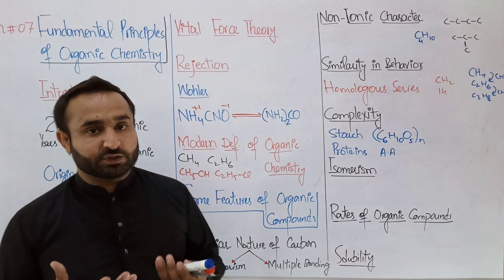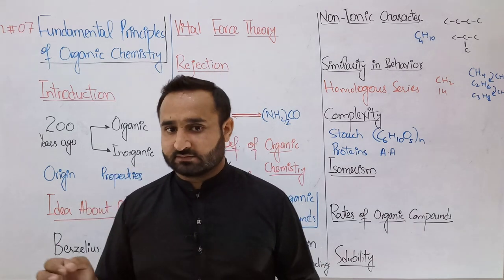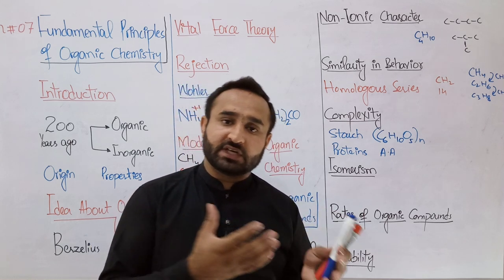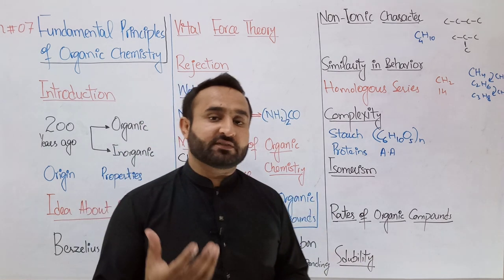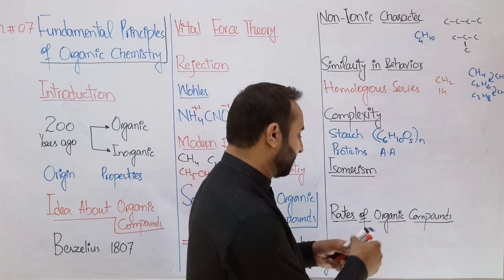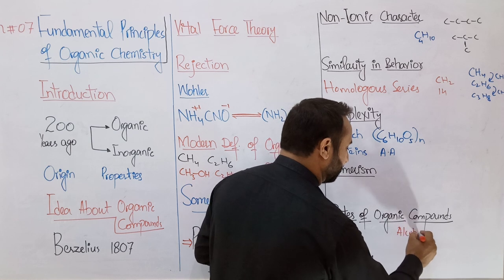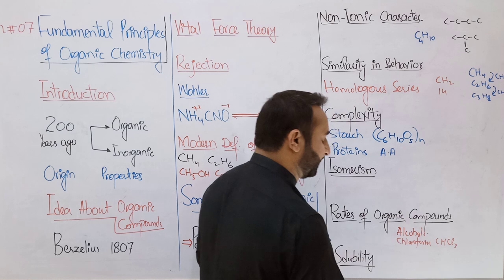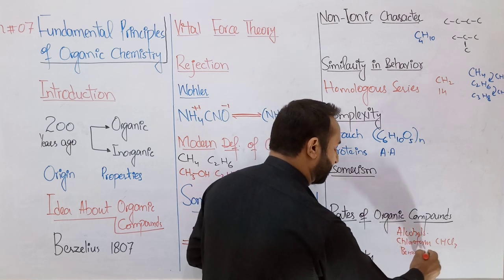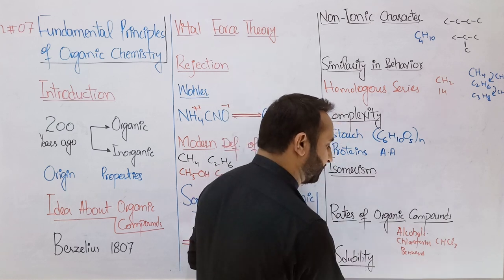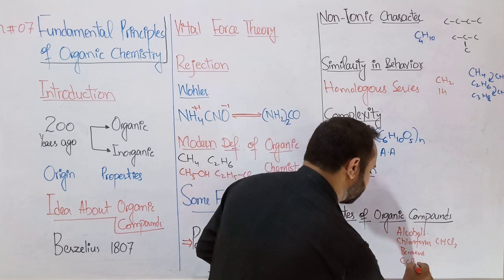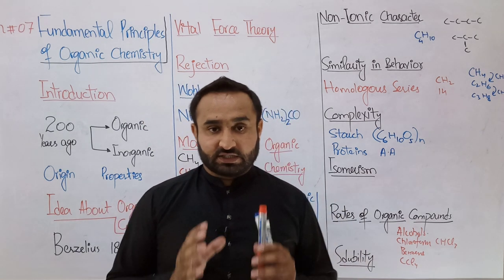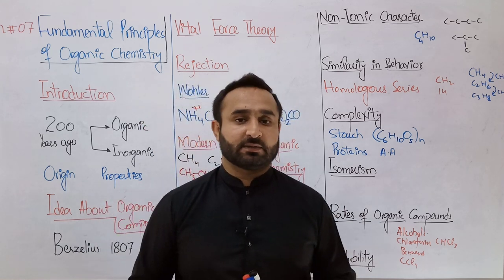Solubility: a universal rule — like dissolves like. Polar dissolves in polar, non-polar in non-polar. Organic covalent compounds dissolve in covalent solvents. Examples of covalent solvents: alcohol, chloroform (CHCl3), benzene (a liquid organic solvent), and carbon tetrachloride. Remember these three or four organic solvents. Note that water, the universal solvent, does not dissolve most organic compounds. This was our lecture on the Fundamental Principles of Organic Chemistry. Thank you very much.